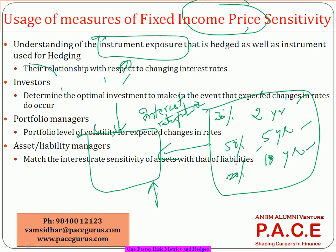From a hedging standpoint, that knowledge is necessary. From an investor standpoint, they'll take decisions in terms of what is the optimal combination to create a portfolio — depending on the risk-taking ability of the person, they may suggest 70% in short term, 20% in medium term, 10% in long term. Investment analysts can create optimal portfolio combinations, and from an asset liability manager's standpoint, the matching of various buckets and sensitivity across assets and liabilities is something they would be doing.